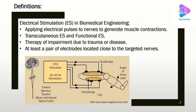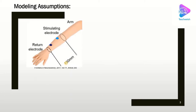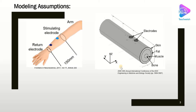Our focus today is on transcutaneous stimulation, which is stimulation through the skin. For modeling, imagine we are modeling the stimulation of a human arm. We can simplify the model into a cylindrical shape. Comparisons of modeling results and experiments have shown that the cylindrical model is a good assumption. The cross-section includes bone, muscle, fat, and skin, with electrodes located on the skin to apply electrical pulses.